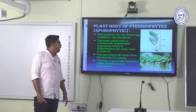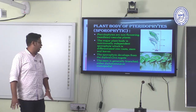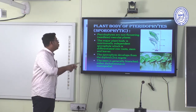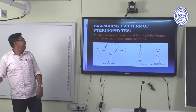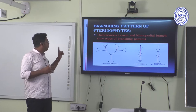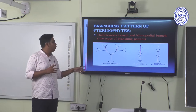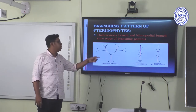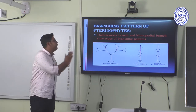The stem is generally branched, either dichotomously or monopodially — two types of branching patterns found in Pteridophytes. Monopodial branching is further of two types: monopodial with lateral branching, and monopodial with opposite branching pattern.